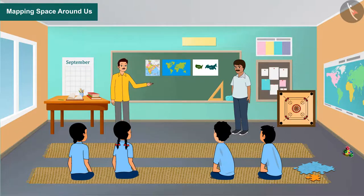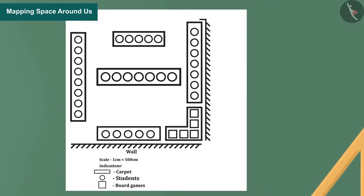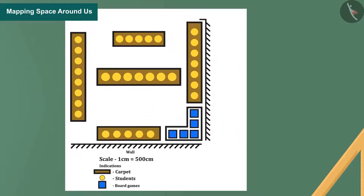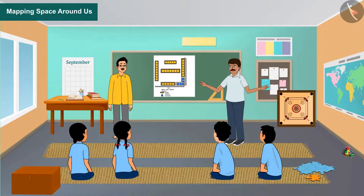Children, I hope you have understood the essential things related to the map. So why not try to make a map of your class now? We have also shown many things in the class map. If we highlight them using colors, the information in the map will become more clear. Come, let's see what your map looks like after coloring. You can easily plan your class better by adapting the changes made in this map.